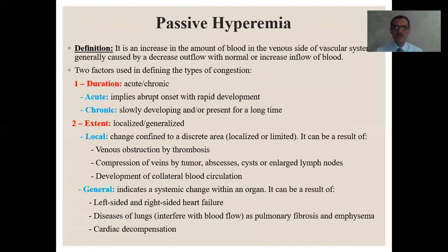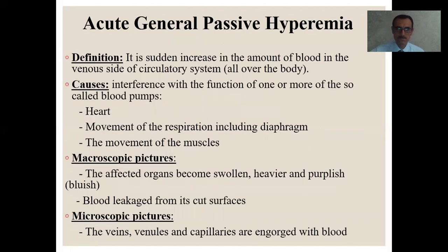General passive hyperemia indicates a systemic change within an organ. It can result from left-sided heart failure, diseases of the lungs that interfere with blood flow such as pulmonary fibrosis and emphysema, and cardiac decompensation. Acute general passive hyperemia is a sudden increase in the amount of blood in the venous side of the circulatory system, caused by interference with the function of the so-called blood pumps: the heart, the movement of respiration including the diaphragm, and muscle movement. Macroscopically, the affected organs become swollen, severe, and purplish or bluish, with blood leakage from cut surfaces.